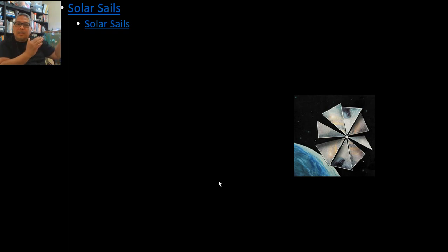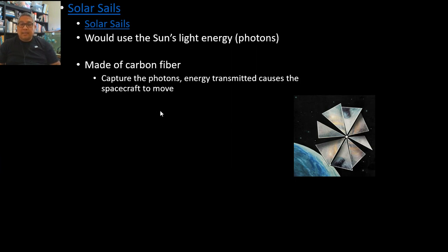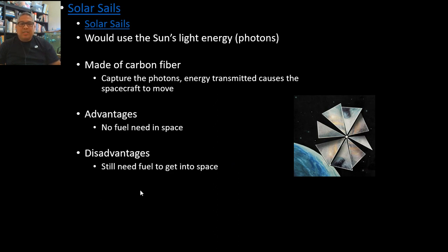Solar sails would use the sun's light energy. It is made of carbon fiber, which is very strong and very light. It captures the photon's energy transmitted, which causes the spacecraft to move. The advantage is no fuel needed—you just need the sun. The disadvantage, you've probably guessed: for those who have solar calculators or solar chargers, you always need the sun. You need to put it in space by burning fuel first, and second, you need the power of the sun. The less sunlight you get, the less power you have.